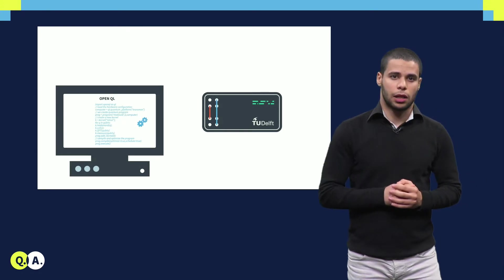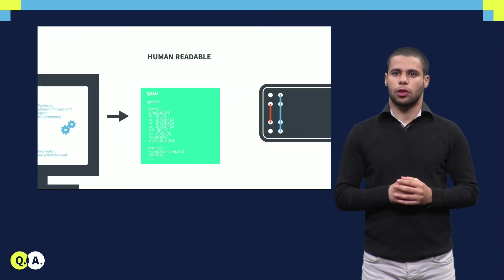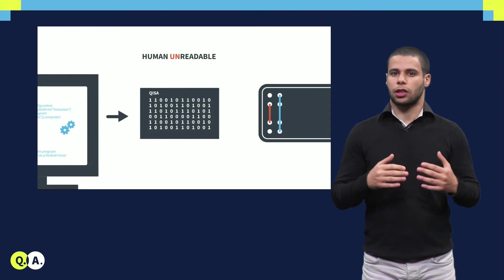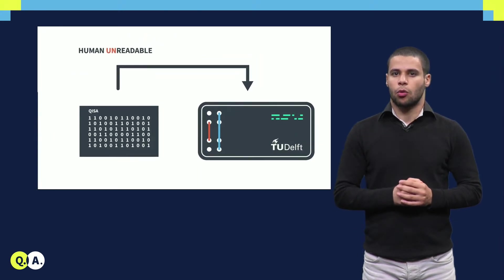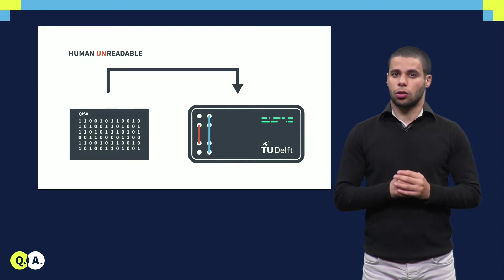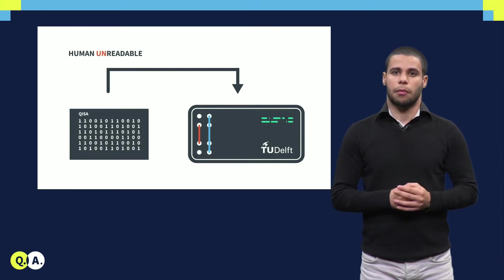As we saw in the compiler lecture, the initial human-readable program implementing the algorithm goes through different compilation steps which produce a binary code. That binary code can be decoded and executed by our quantum computer.